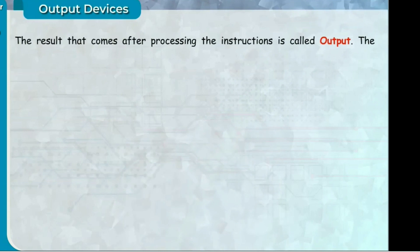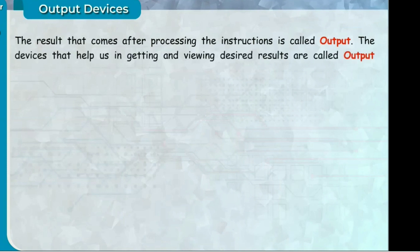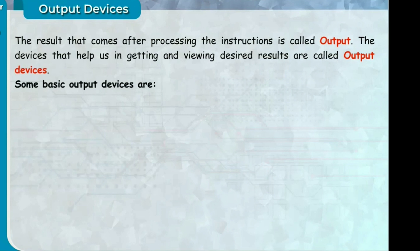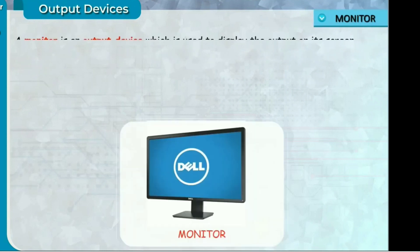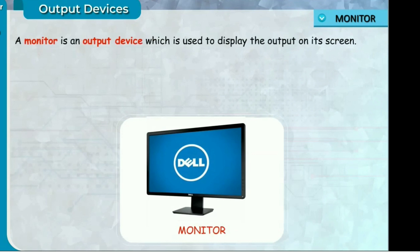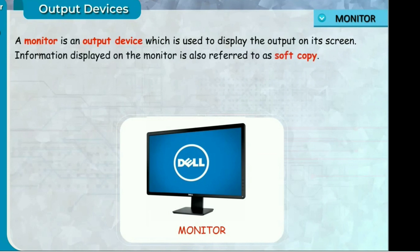Output devices. The result that comes after processing the instructions is called output. The devices that help us in getting and viewing desired results are called output devices. Some basic output devices are: Monitor — a monitor is an output device which is used to display the output on its screen, also referred to as soft copy.